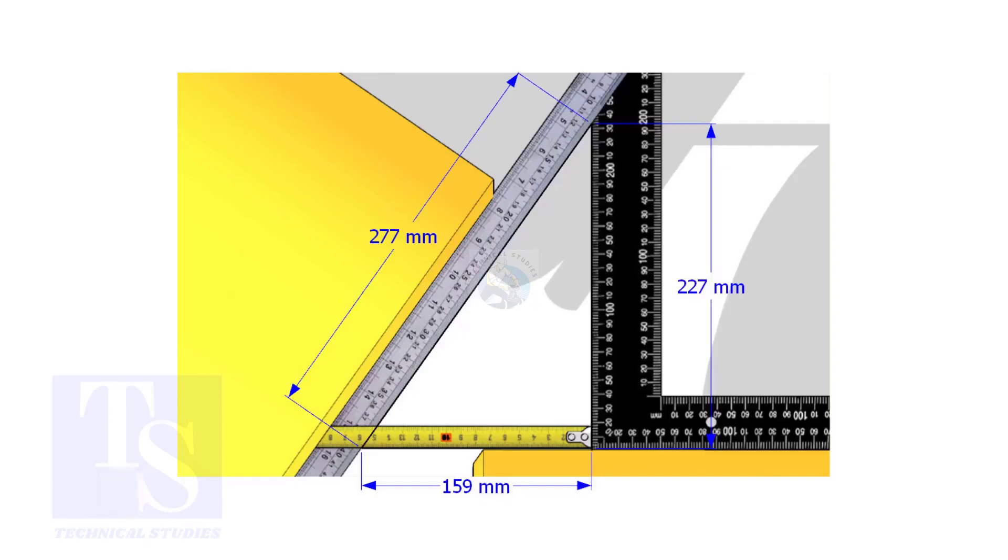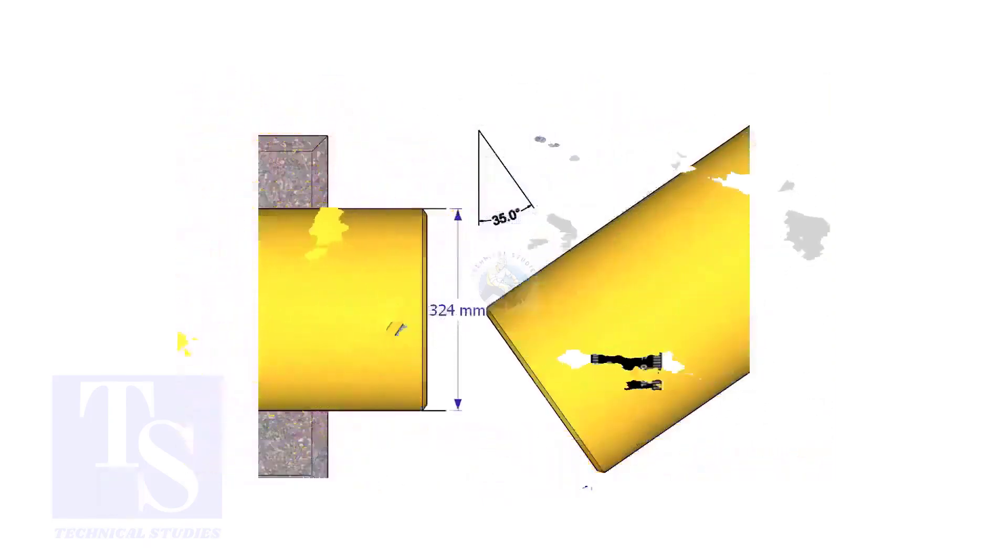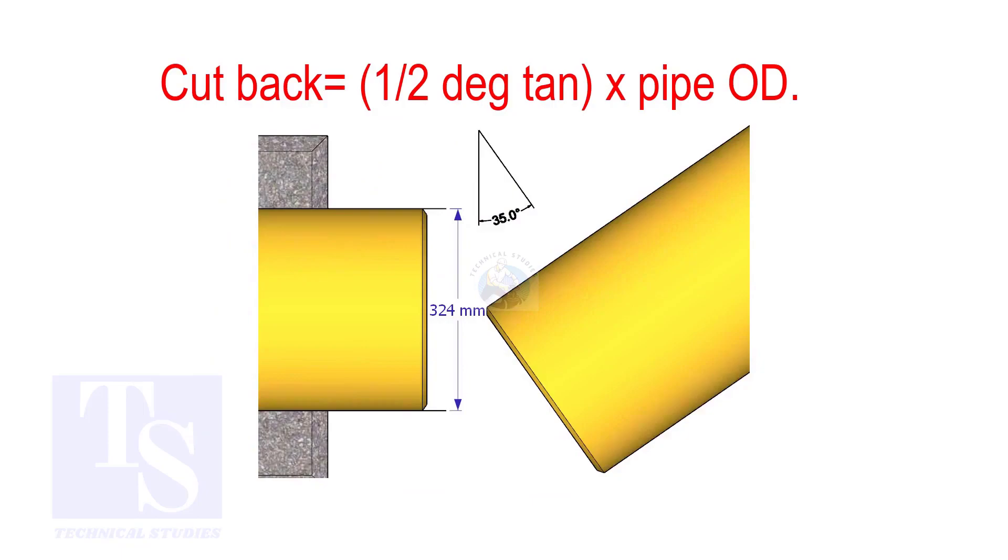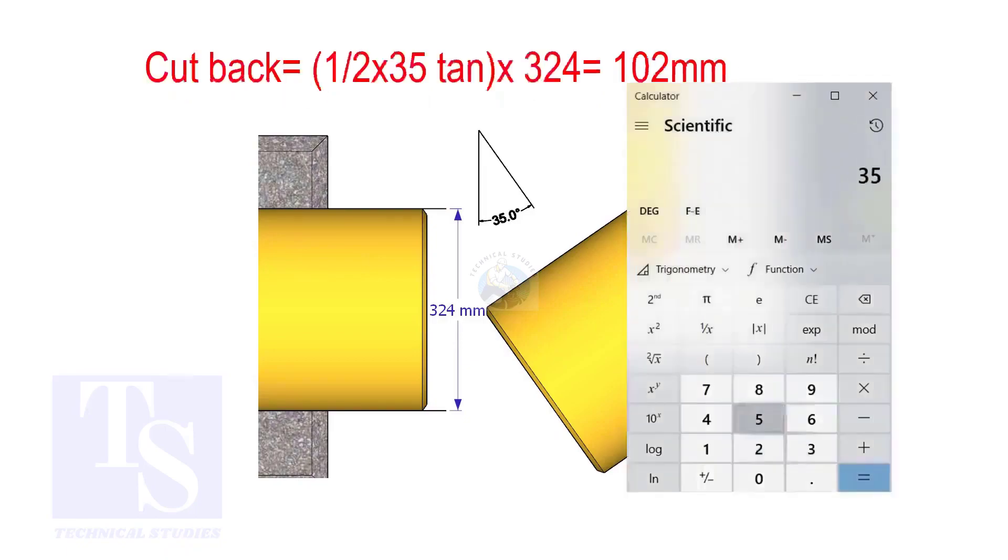How to calculate the cutback of a single cut miter. When it is a single cut, the cutback is half degree tan multiplied by the OD of the pipe. The answer is 102 millimeters.